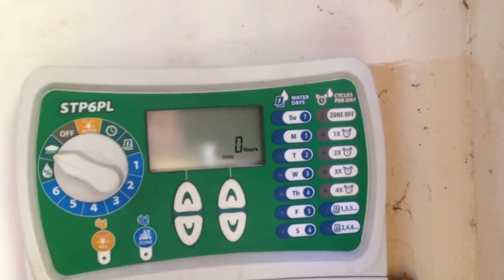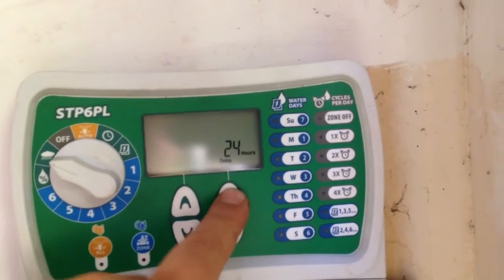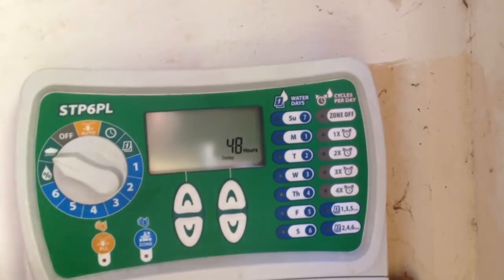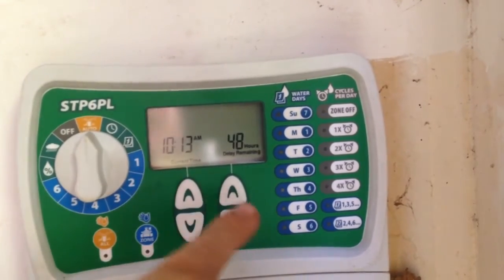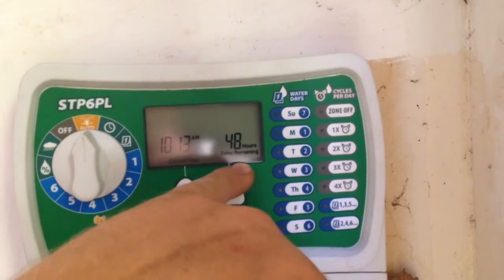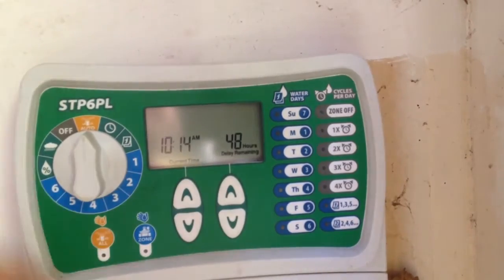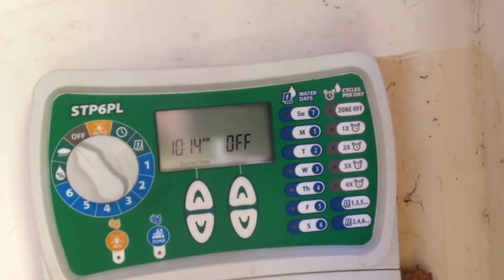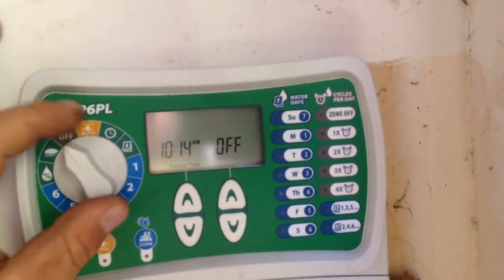The other feature this is going to have is rain delay. And this is going to be number of hours. So, 48 hours, it will delay two days when it's on rain delay. You can put it back on run and it will say 48 hours remaining in the delay. Off, it's of course not going to run. If it's running and you want to shut it off, you can flip it to off and that will shut it off.